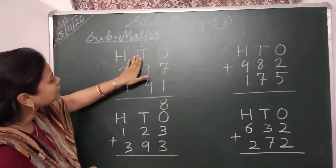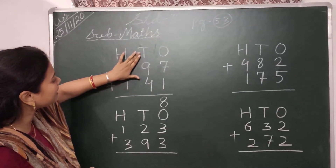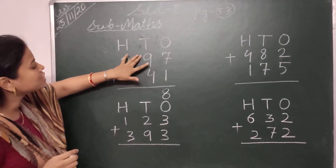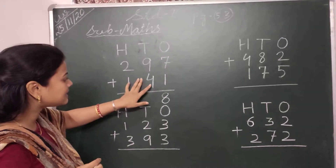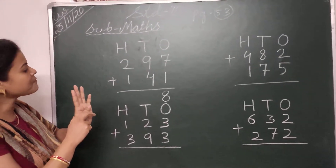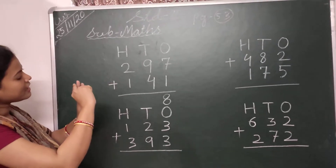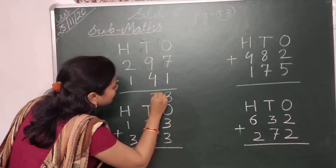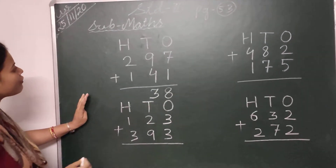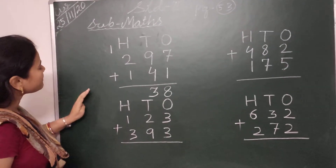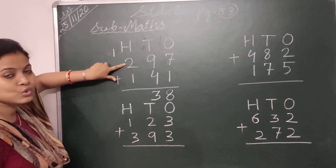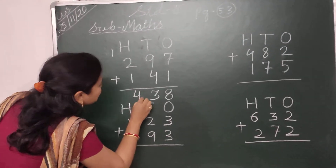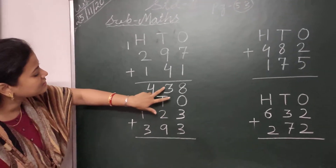Then I come to the 10's place. The numbers are 9 and 4. 9 is the larger number, so I keep 9 in my mind and count 4 fingers: 9, then 10, 11, 12, and 13. I write here the number 3 and carry 1 to the 100's place. In the 100's place, 1 plus 2 is 3, plus 1 carried is 4. So your answer is 438.